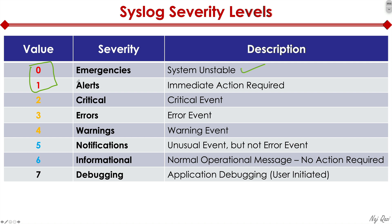Severity value one is alerts, meaning immediate action is required. Severity level two means it's critical and you need to pay attention to it. Severity level three means some sort of error event has occurred. Severity level four means it's some sort of warning that you need to pay attention to. Severity level five means it's an unusual event, but it's not an error message.